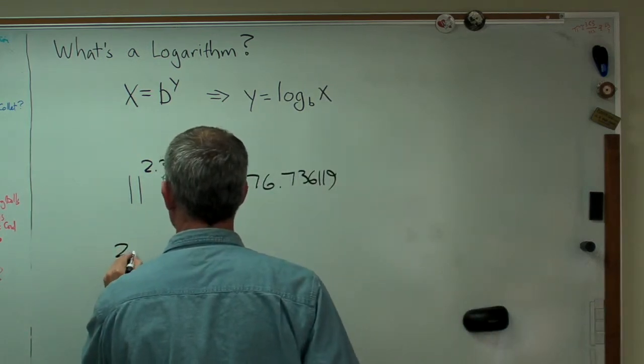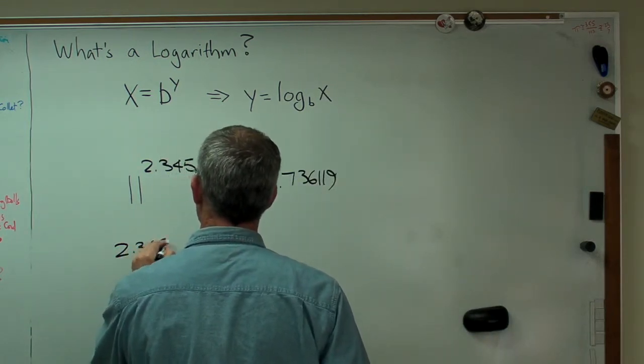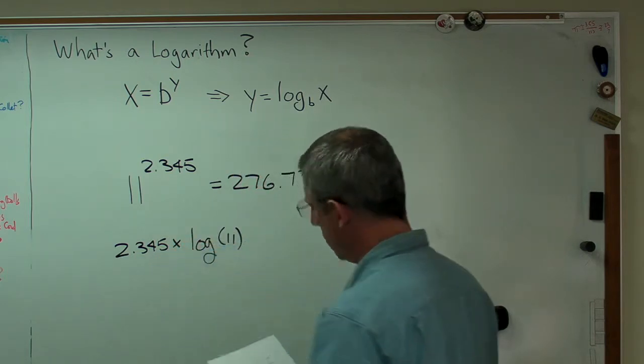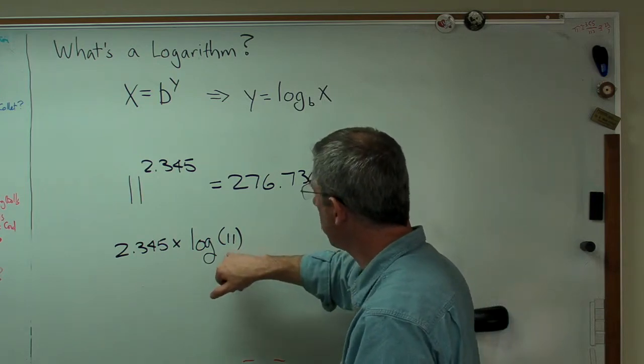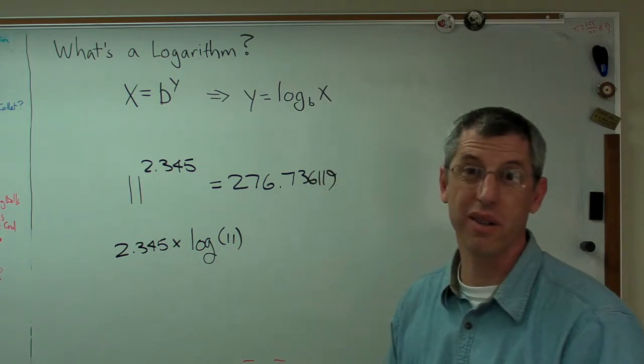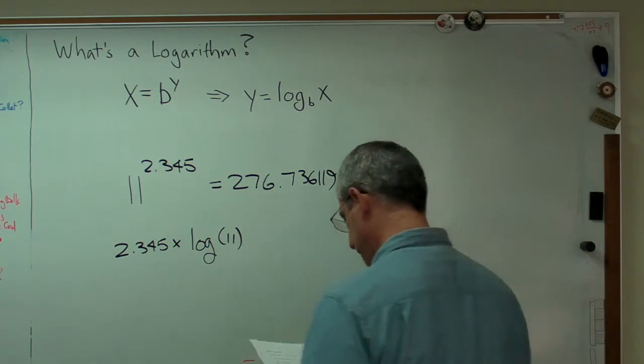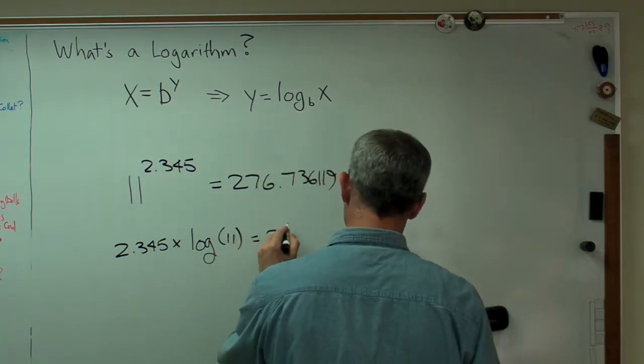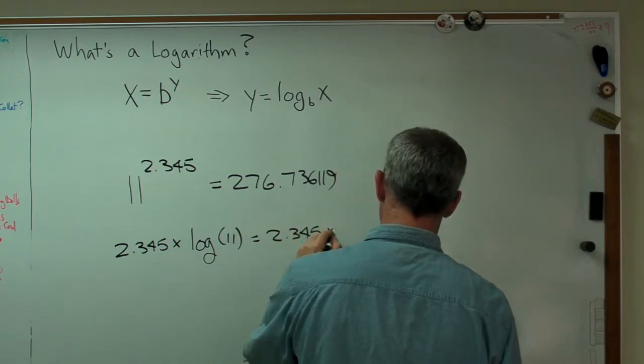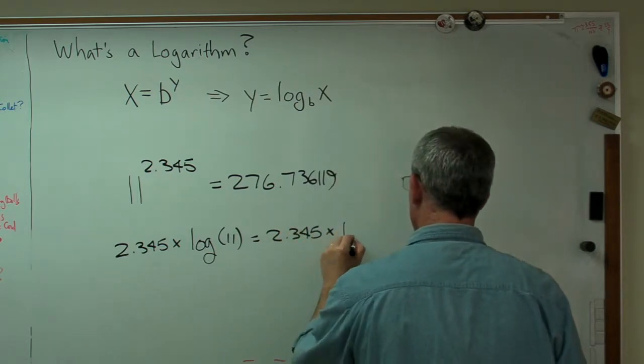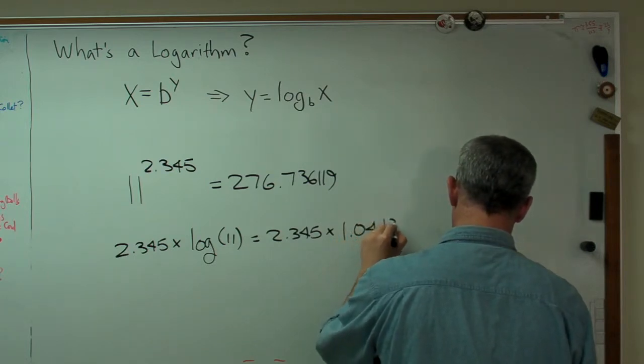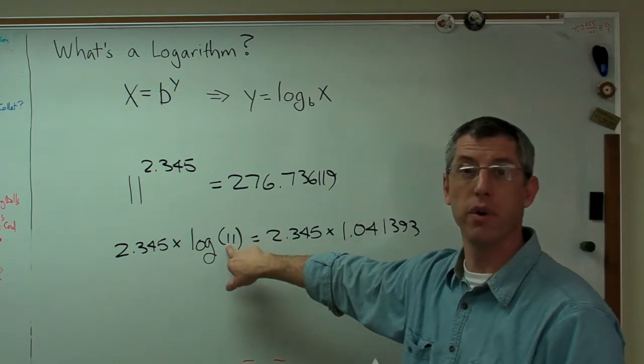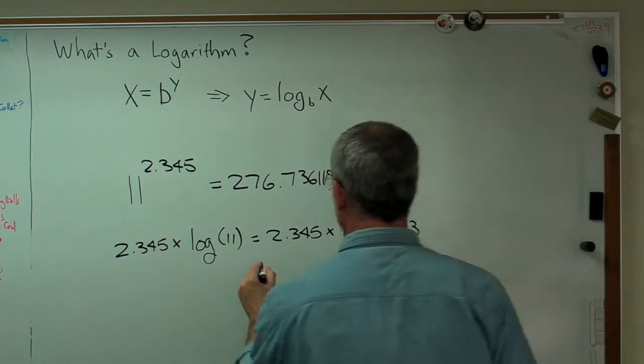I know how to punch it into a calculator. It just turns out that's 276.736119. Again, way more decimal places than you'd normally use. Now, how do you do that by hand? I'm not sure I know, but I do know how to do that using logarithms. What I can do is I can say 2.345 times log of 11. Now, if you look at this, log of 11 should be a little more than 1 because log of 10 is 1. We're working in base 10 here.